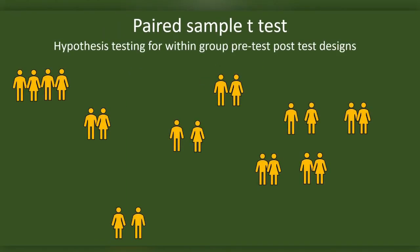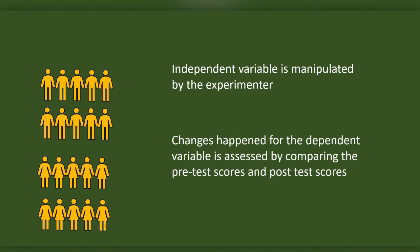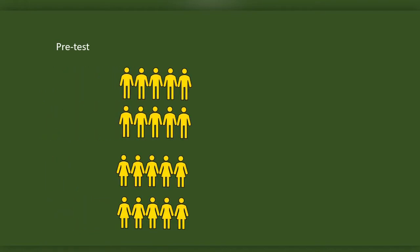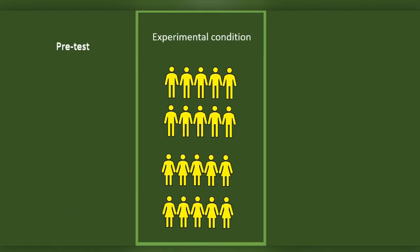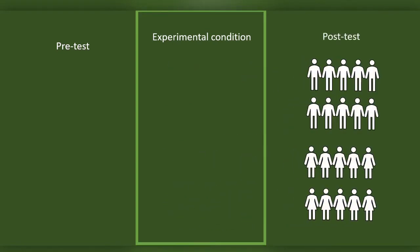We will use a Paired Sample T-Test to test a within-group research hypothesis with a pre-test post-test design. In such a design, the experimenter manipulates the independent variable and examines how it affects the dependent variable. For instance, imagine there are a set of participants. We examine their positive and negative effect by conducting a pre-test, then subject them to an experimental condition to enhance positive effect and reduce negative effect, followed by a post-test.